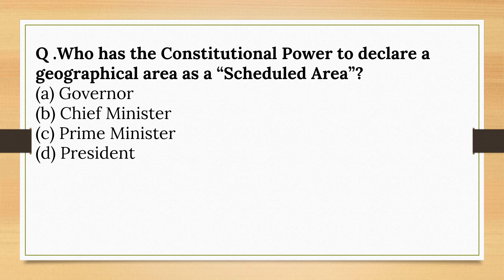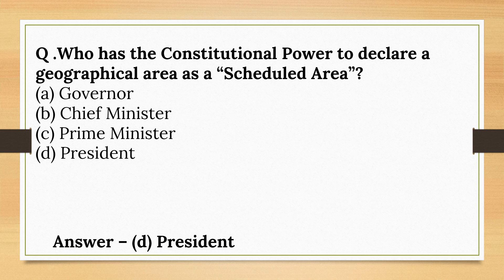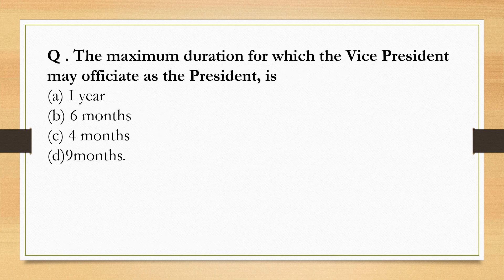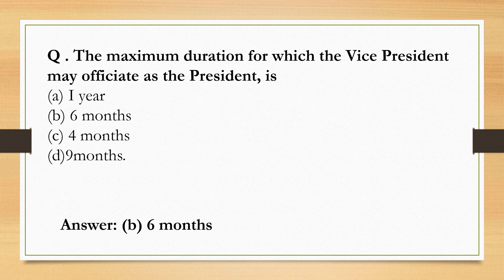Who has the constitutional power to declare a geographical area as a scheduled area? This is the President of India — only the President has this constitutional power. The maximum duration for which the Vice President may officiate as President is 6 months; he cannot officiate for more than 6 months.